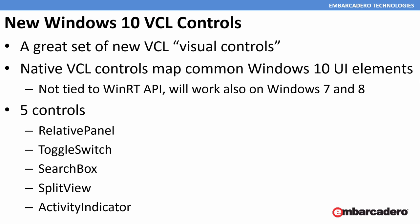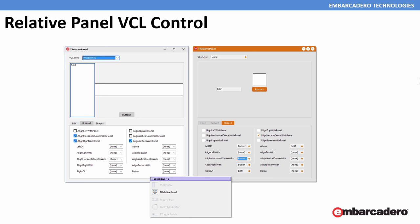As part of 10 Seattle, we ship five new Windows 10 VCL controls — native VCL controls that map to common Windows 10 user interface elements and also run on Windows 7 and Windows 8. The five new controls are: the Relative Panel, the Toggle Switch, the Search Box, the Split View, and the Activity Indicator. The Relative Panel is a new layout panel that lets you position and align child objects in relation to each other or the parent panel — for example, specifying that text will always be positioned to the left side of the panel and a button always placed below the text.